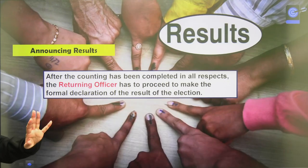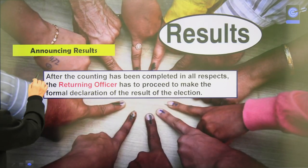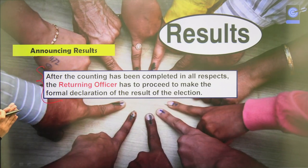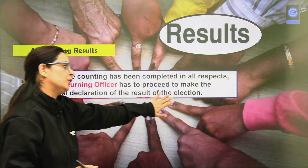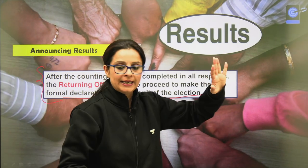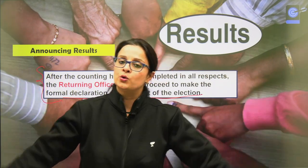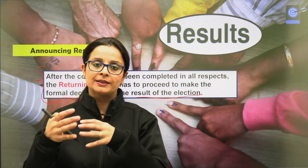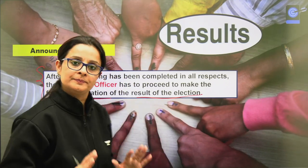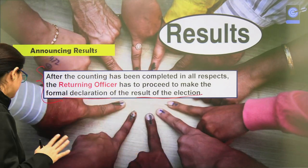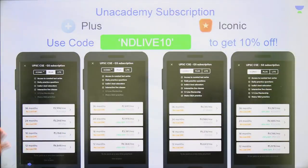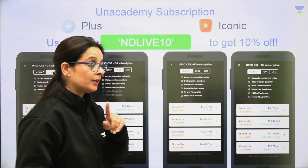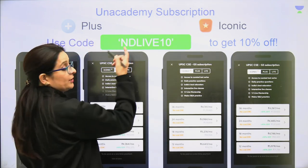Finally, when counting is complete, the returning officer proceeds to make the formal declaration of the result of the election — this is how the result comes in front of us. First we see leads and trends, and finally results are declared. This is how the entire EVM counting process is done. I hope you have come to understand this. Don't forget to like, share and subscribe.